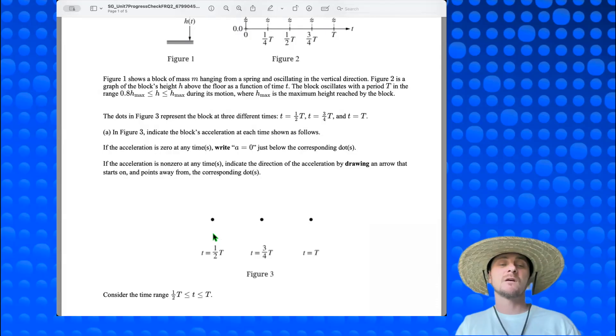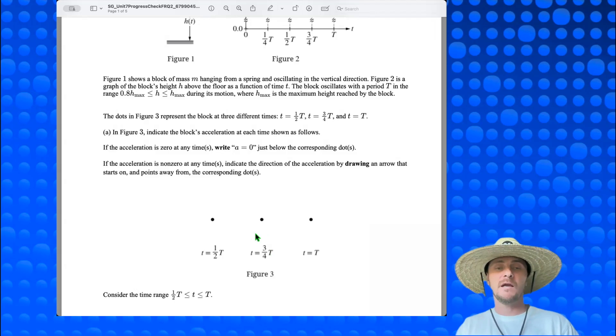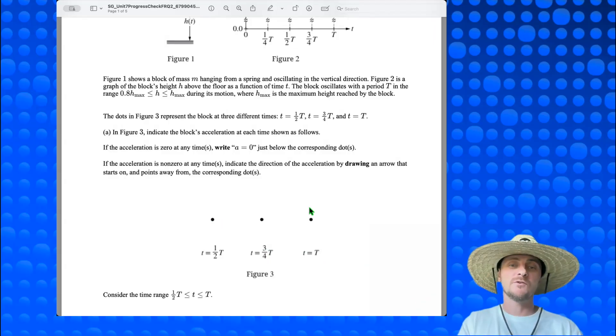So on these three dots, I would draw a downward arrow at one-half capital T. I would write a equals zero at three-quarters capital T. And finally, on the third dot, at time equals capital T, or the full period, I would draw an upward arrow that was the same length as this downward arrow. And that's it for part A.